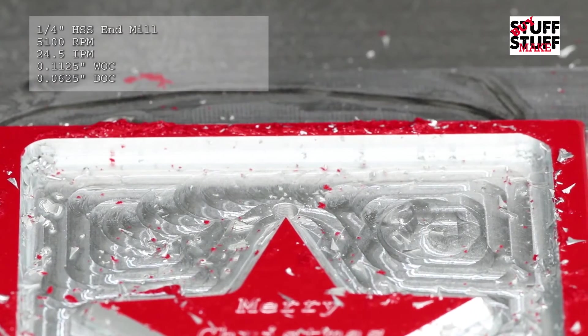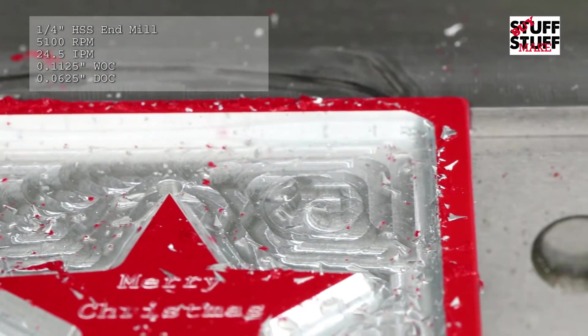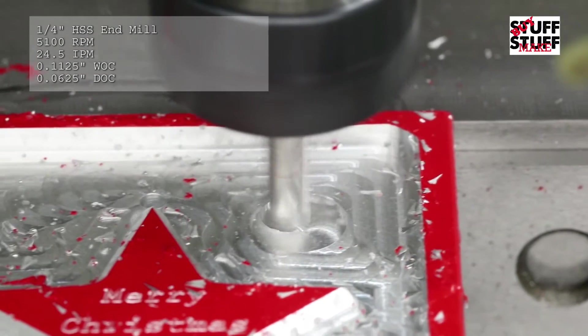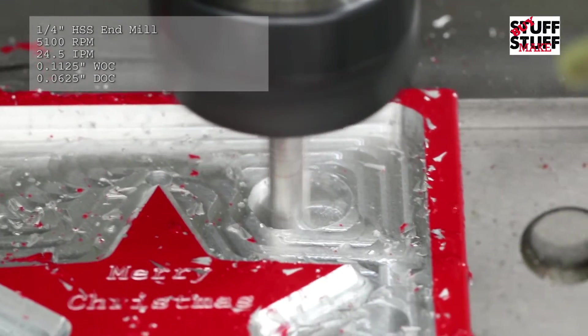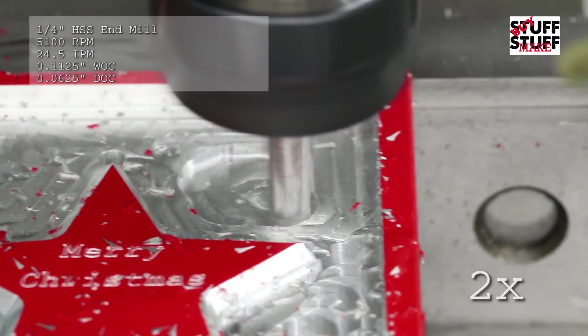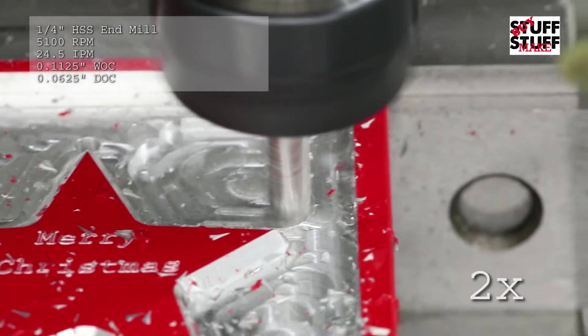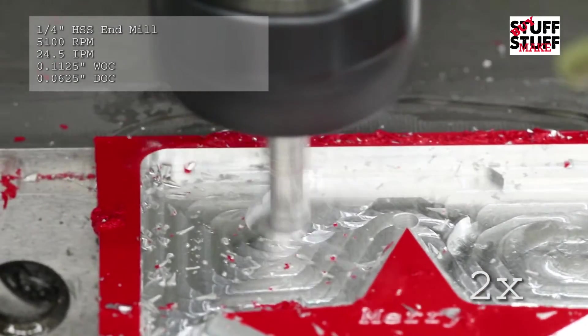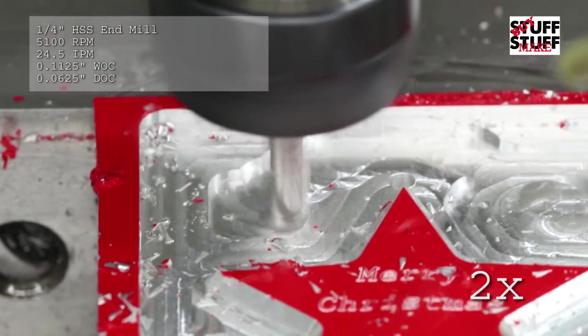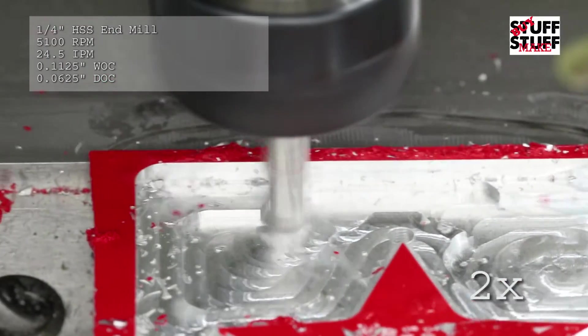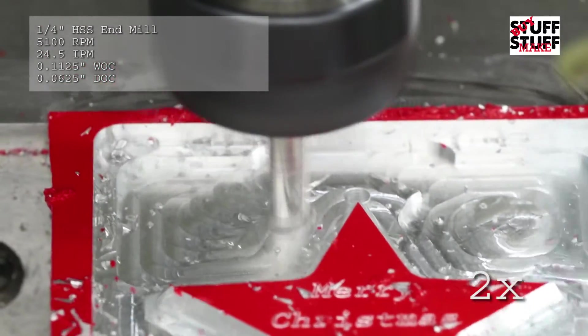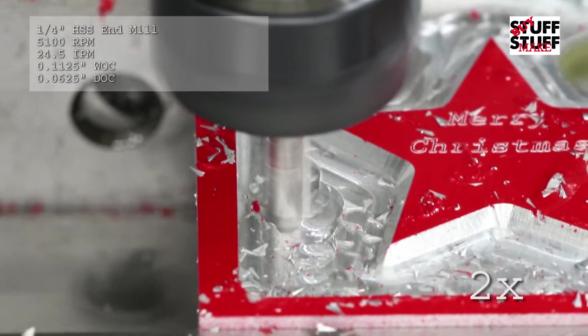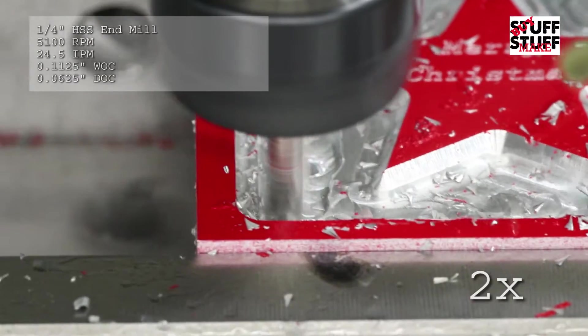Then we'll go back in with the quarter inch end mill and do another roughing waterline down to I think I had it set to five thousandths thick. Actually I think I had this supposed to be like ten thousandths, and then I come in after this and do a 2D contouring with the eighth inch end mill, which gives me the radius I want in the corners, and that brings it down to I believe five thousandths thickness there, maybe even a little less.